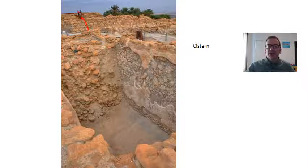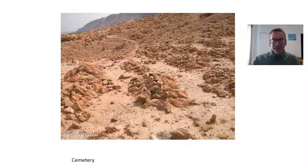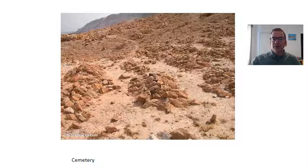Here is one of the cisterns — if you look at the top of the image you can see people, which gives you a sense of how large it is. Moving on to the cemetery: there is some very interesting archaeological work being done there. It was assumed the Essenes were almost entirely men, but as researchers went through the cemetery they discovered some female bodies. It's not entirely clear what role women played at Qumran, and work on this site is still ongoing today.